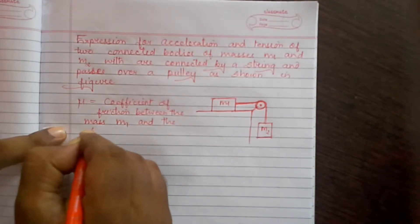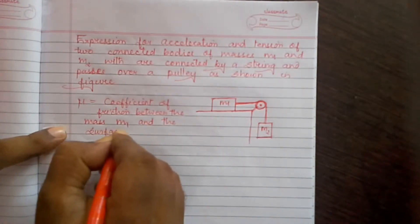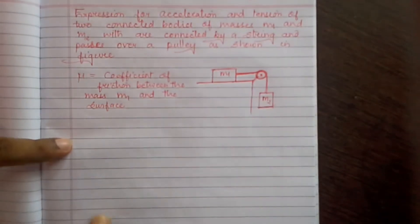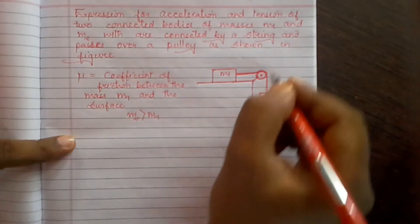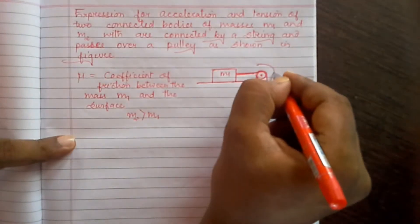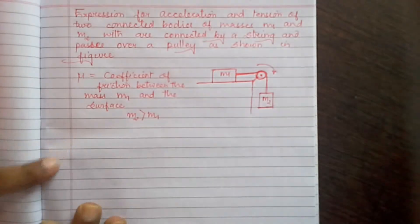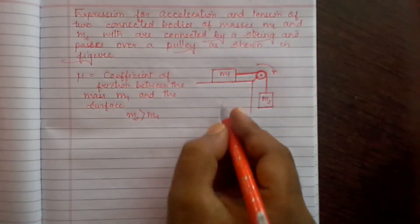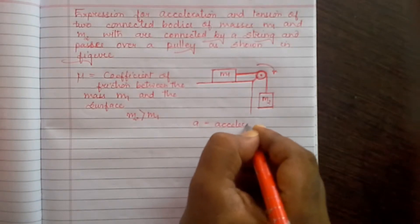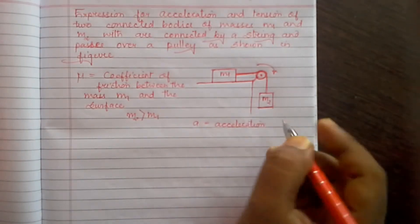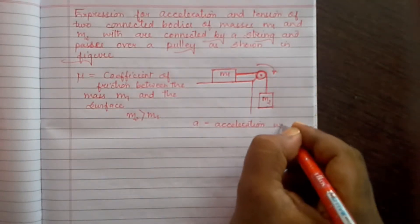And here we will also assume that M2 is greater than M1. As a result, the system is moving like this, so let a be the acceleration with which the masses are moving.